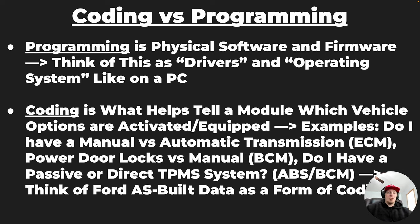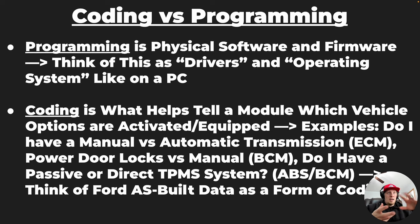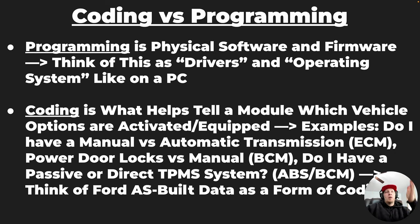Coding tells the module which options need to be turned on or off. Sometimes there's also secondary things like parametrization — Volkswagen likes to use that terminology — which is another type of telling the module which vehicle it's in and what features and equipment it has. Programming, specifically, is like the operating system or firmware of the module, which is different. You could program a module and give it all the software and firmware it needs and it might still not work correctly — because maybe it hasn't been given the coding. Depending on vehicle manufacturer, some handle all option configuration through the programming process; others separate it into two steps: programming and coding.